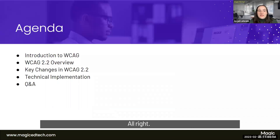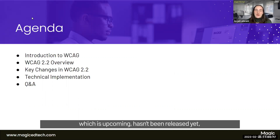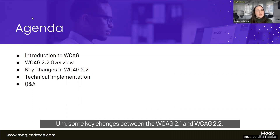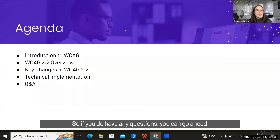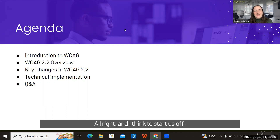Just a little agenda for today: first we'll talk about WCAG and what it's been for the last few years, then look at WCAG 2.2 which is upcoming and hasn't been released yet, give you an overview of what it will entail, key changes between WCAG 2.1 and 2.2, technical implementation, and then a Q&A portion after that. You can drop questions in the Q&A box below. We also have closed captions enabled — hit the CC button at the bottom.